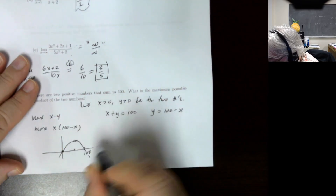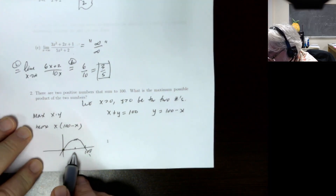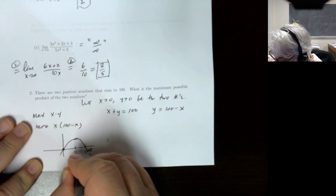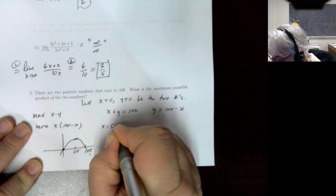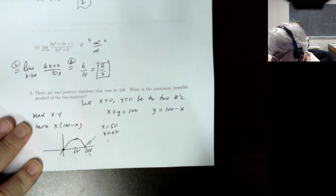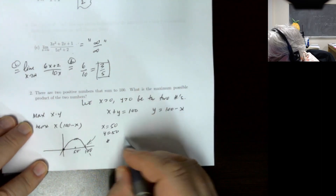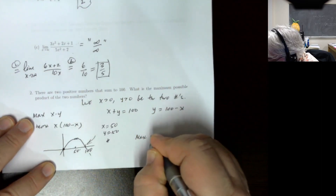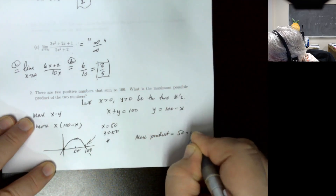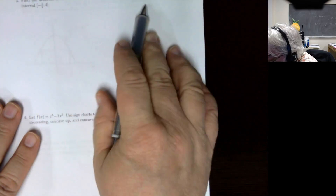The maximum is found at the vertex. Since this is an upside-down parabola due to the minus x squared term, the maximum is right in between x equals 0 and x equals 100, so x equals 50. Therefore x equals 50 and y equals 50, and the maximum possible product is 50 times 50, which is 2500.